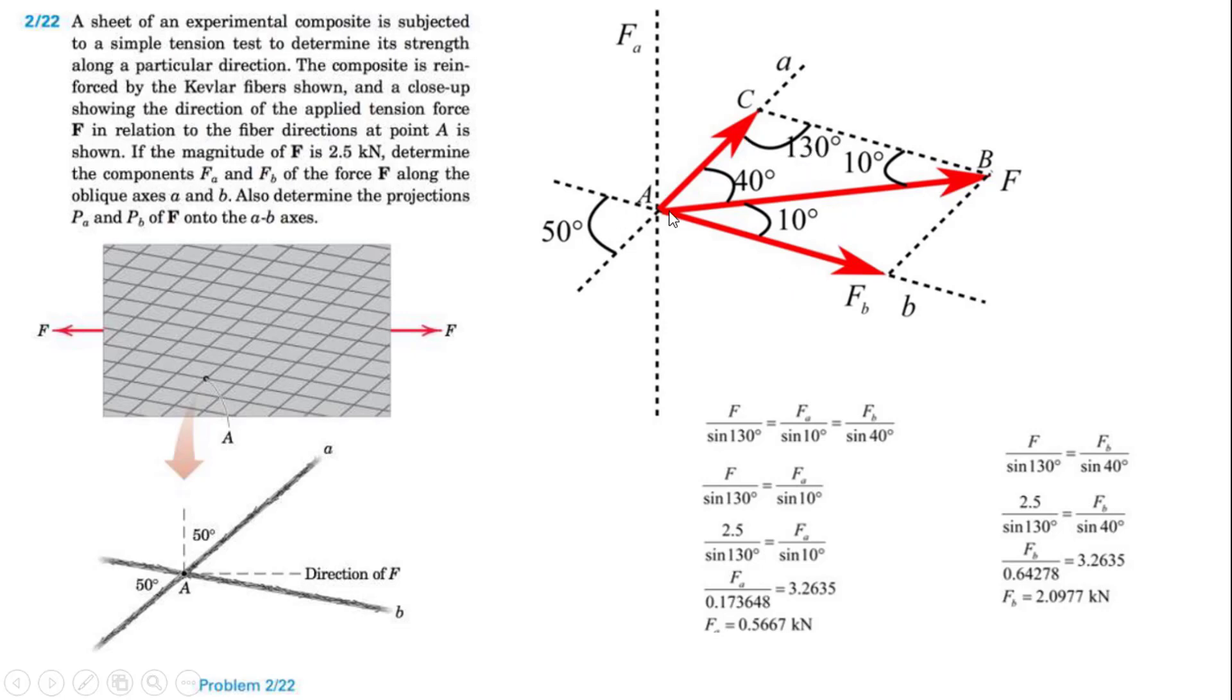Using the sine law: FA over sin 10 equals F over sin 130, and FB over sin 40 equals F over sin 130. So FB is F times sin 40 over sin 130, which gives us FB.